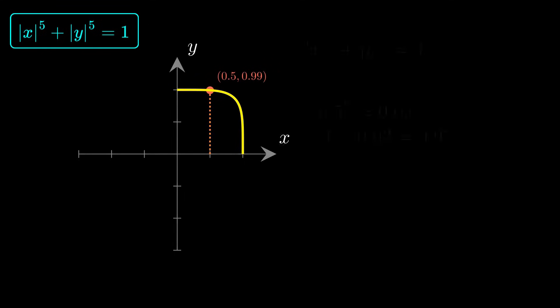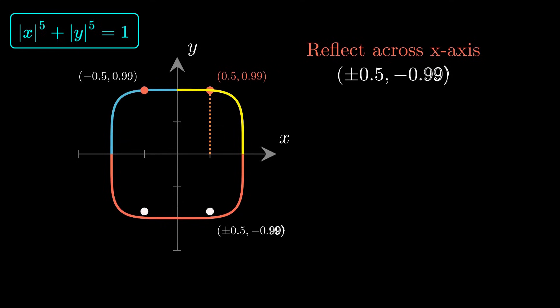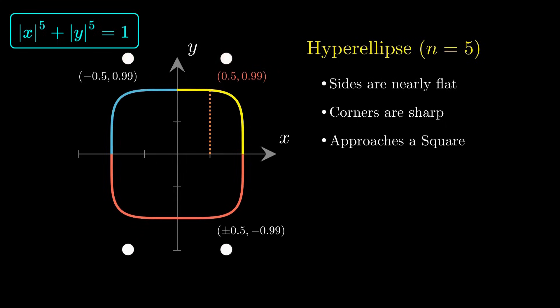Now, reflect the shape across the y-axis. The point with negative x produces the same y value, so the left side matches perfectly. Next, reflect everything across the x-axis. Negative y gives the same result because we raise it to the 5th power. All 4 pieces together form a rounded square with sharp corners and very flat edges.